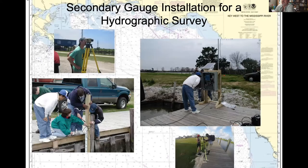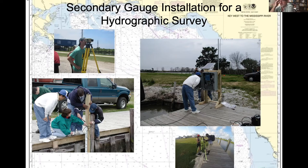When additional tide gauge stations are needed for a survey, secondary gauges must be installed. Photographs show students installing a temporary tide gauge, including water level instrumentation with two pressure sensors — a water bubbler and a piezoelectric crystal. The data logger, tide staff with pressure sensors, and the surveying of the tide staff into a set of benchmarks are all shown.